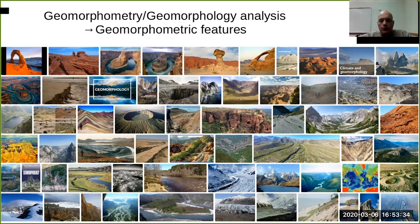These shapes are able to represent and influence species distribution. The science behind the study and analysis of these forms is called geomorphometry or geomorphology analysis, and the features that are able to detect and extract are called geomorphometry features.